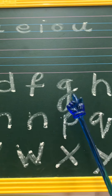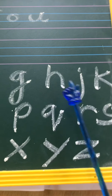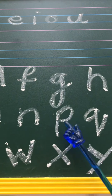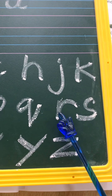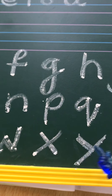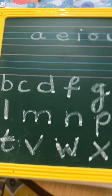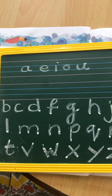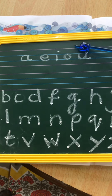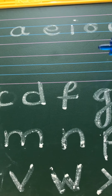The vowels are A, E, I, O, U, and the consonants are B, C, D, F, G, H, J, K, L, M, N, P, Q, R, S, T, V, W, X, Y, Z. So these are all 26 letters — five are vowels and the rest are consonants.